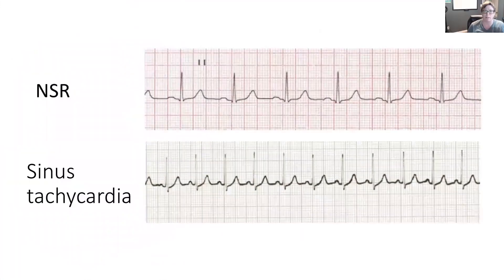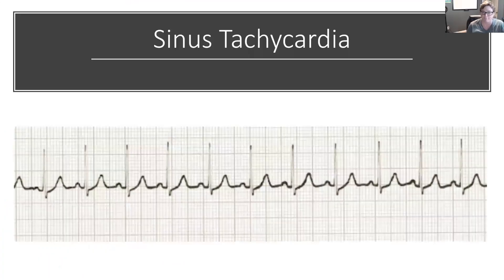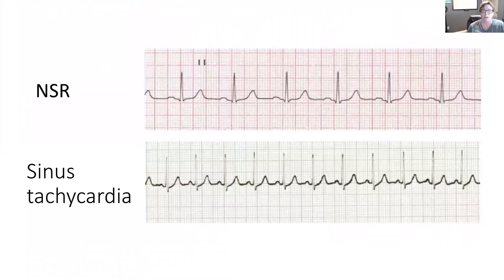It really becomes important to identify the underlying cause in order to select the right treatment. Here is a sinus tachycardia ECG: you can see the characteristic P wave, QRS, and T wave, but they come very quickly. The ST segment is not flat because the rhythm is happening so fast it moves right into the T wave. This is pretty common in sinus tachycardia — the ST segment will not be on the isoelectric line, almost like a slurring of the J point into the T wave.